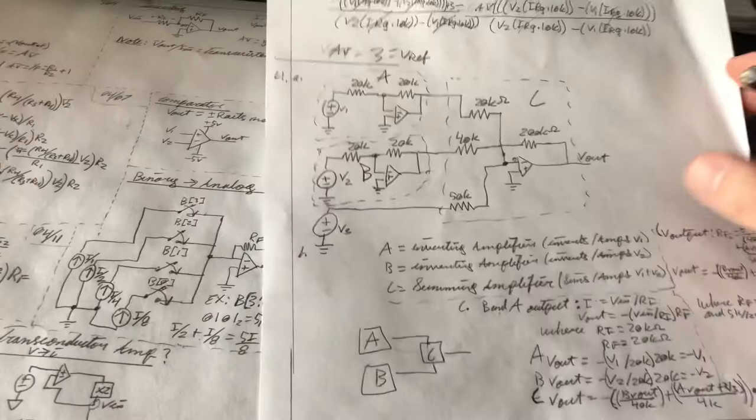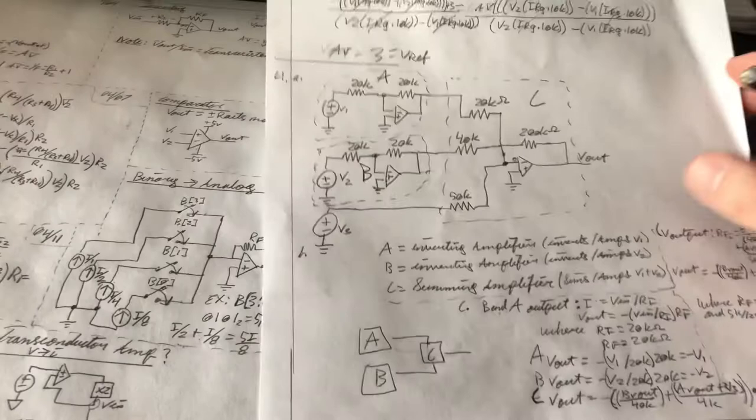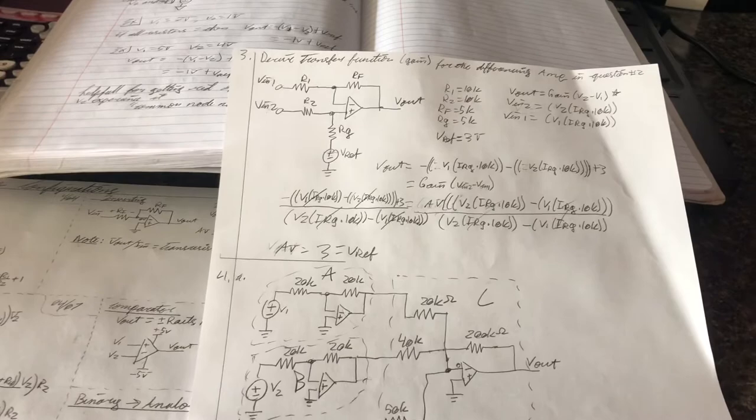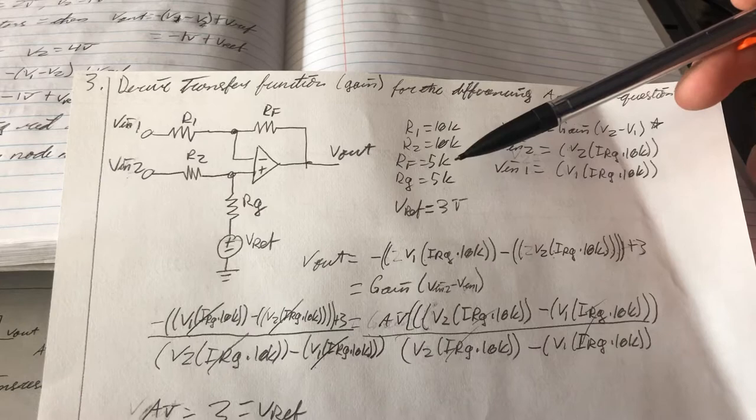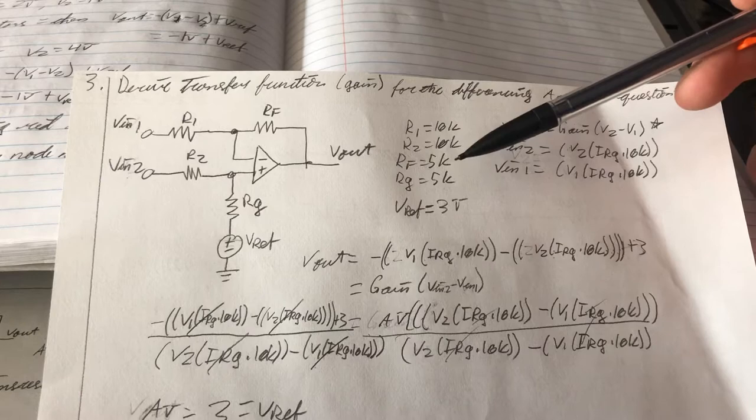It says derive the transfer function, the gain for the differencing amplifier in question number 2. So important information that we're going to need to know here. Let me move in a little bit. So R1 equal to 10k, R2 equal to 10k, the reference voltage equal to 5k, and the reference ground equal to 5k, while the reference voltage remains the same at 3 volts.